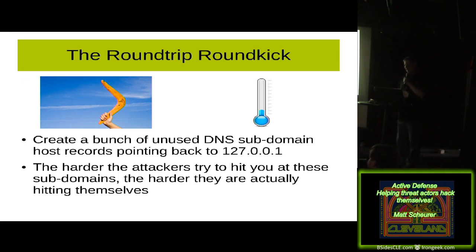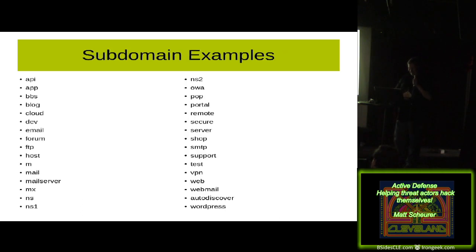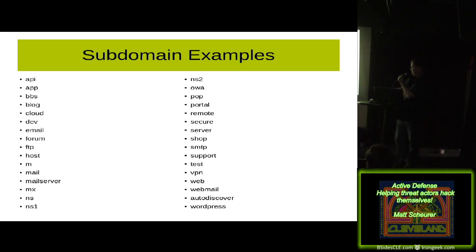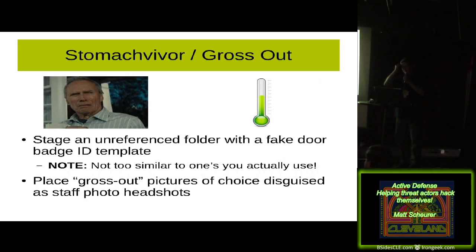The first active defense I want to talk about is called the round trip round kick. The idea is that you create a bunch of unused DNS subdomain host records that point back to the loopback address. The fun part is the harder the threat actors think they're hitting you, the harder they're actually just hitting themselves. A sample list includes: dev, email, FTPs, mail.YourDomain.com pointing back to loopback, name servers, Outlook Web Access, Auto Discover if somebody's trying to figure out your Exchange environment, Webmail, WordPress — the list goes on and on.